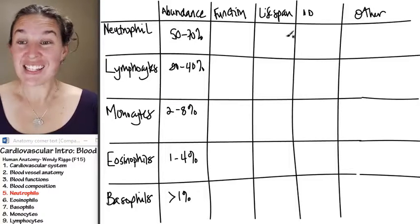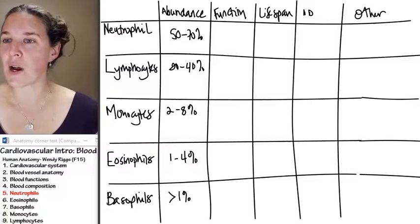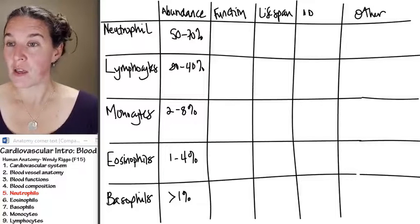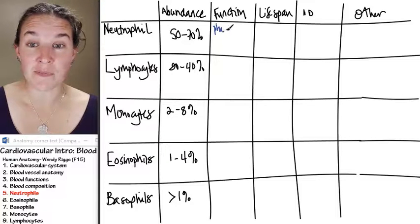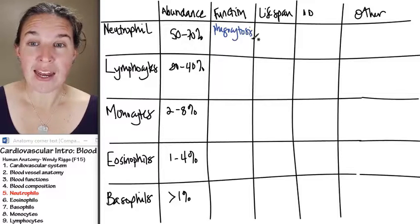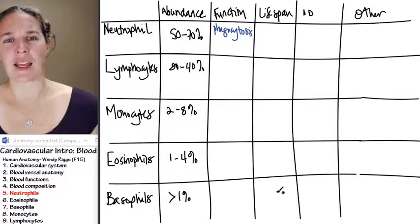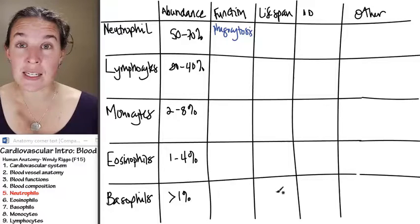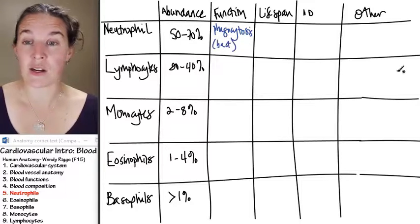So let's fill in this chart for the neutrophils first. I'm going to start out with their function. The function of the neutrophils is primarily phagocytosis. And in Wendyland, that is yumptialization. These guys are roaming around and yumptializing bacteria, mostly bacteria.